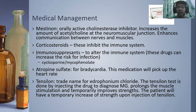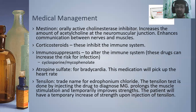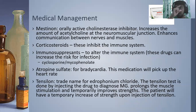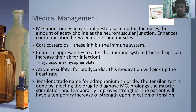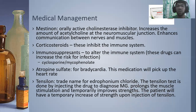For medical management, we have mestinon, which is an orally active cholinesterase inhibitor, so it increases the amount of acetylcholine at the neuromuscular junction. The enzyme cholinesterase is responsible for the lysis or destruction of acetylcholine when it is no longer needed. So mestinon inhibits that enzyme, allowing acetylcholine to remain and bombard the remaining receptor sites in order to enhance communication between our nerves and muscles.